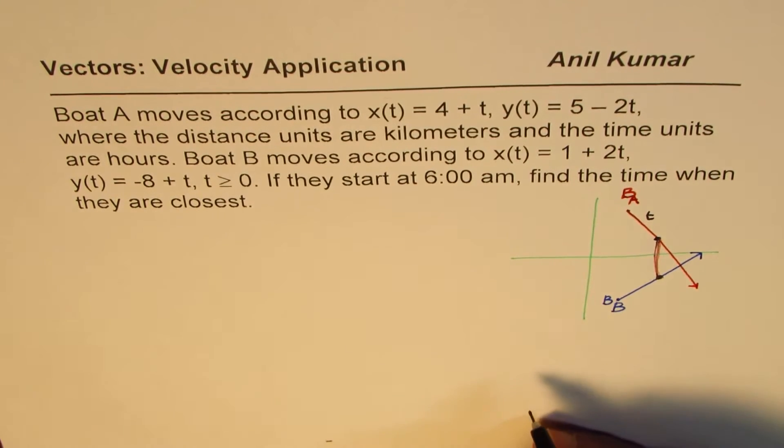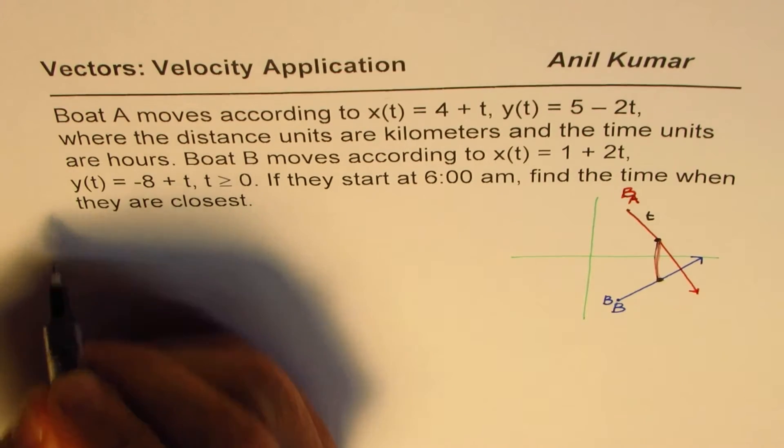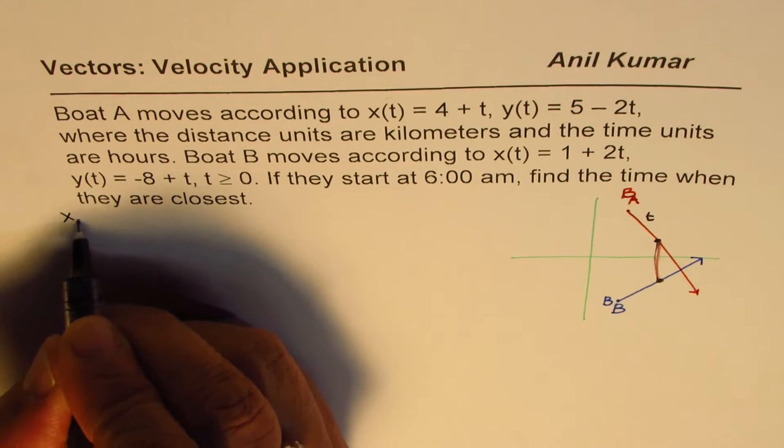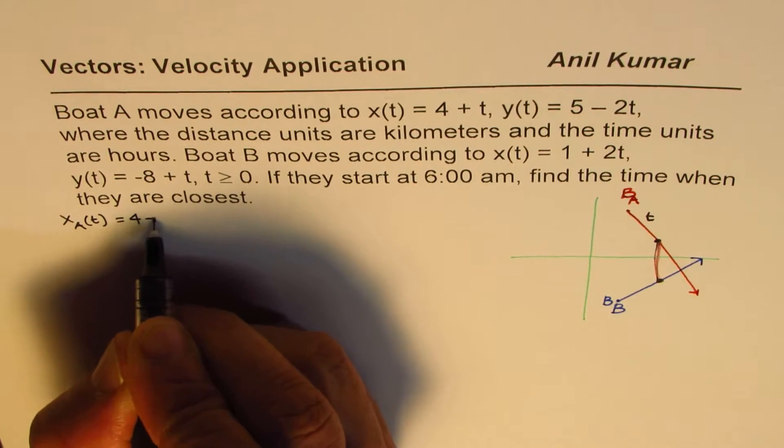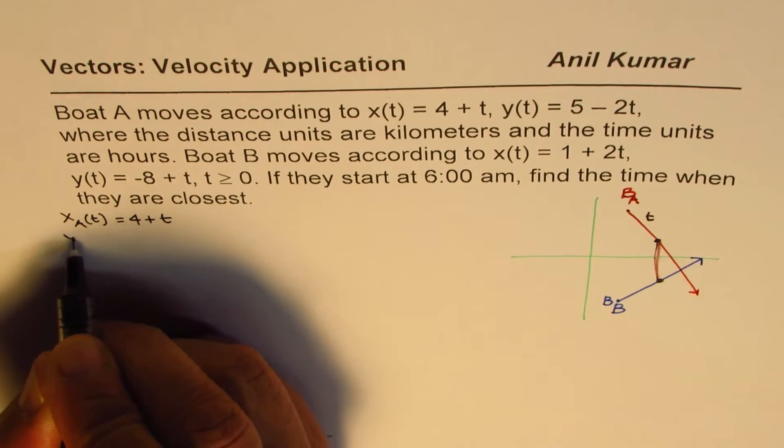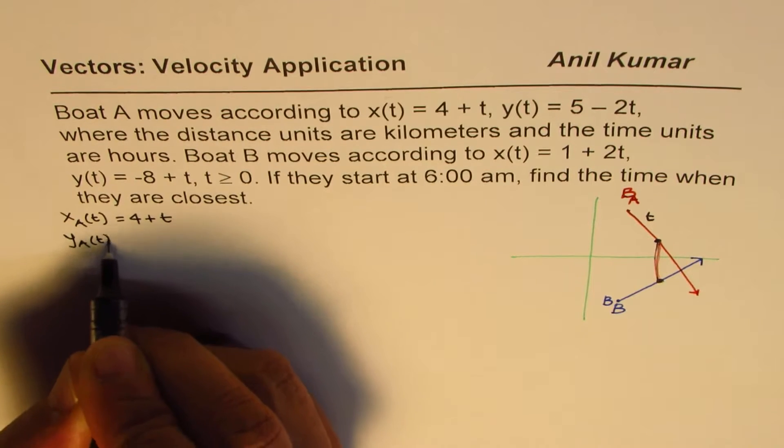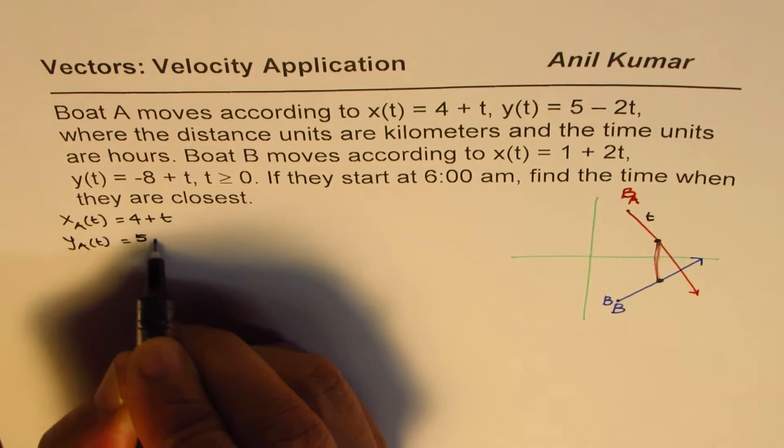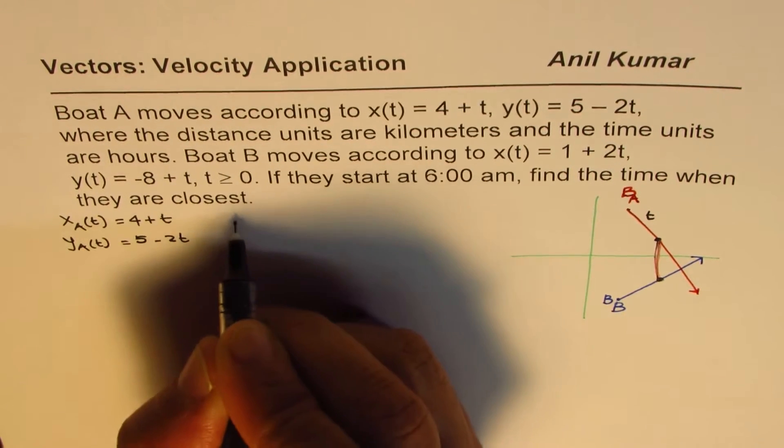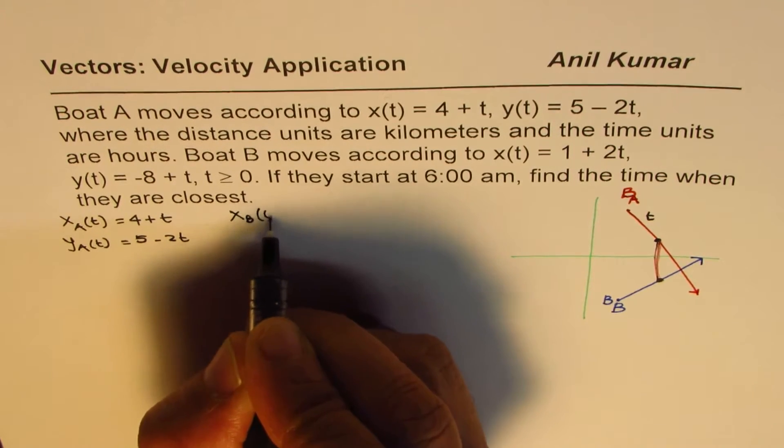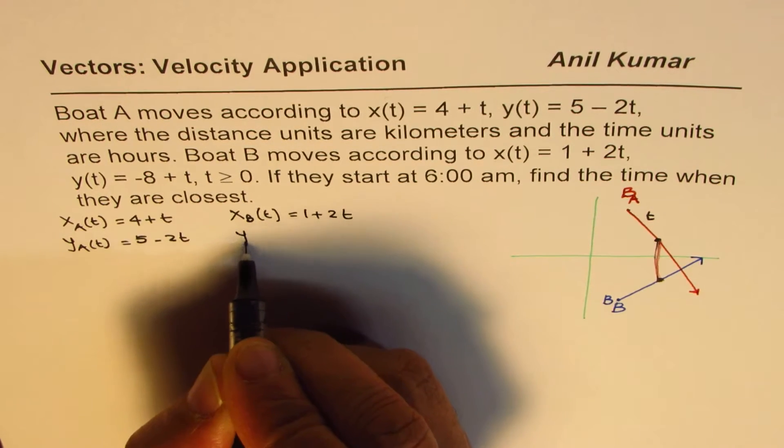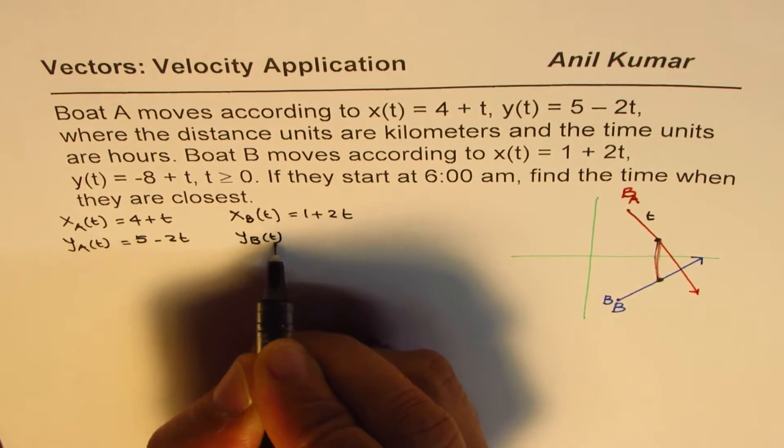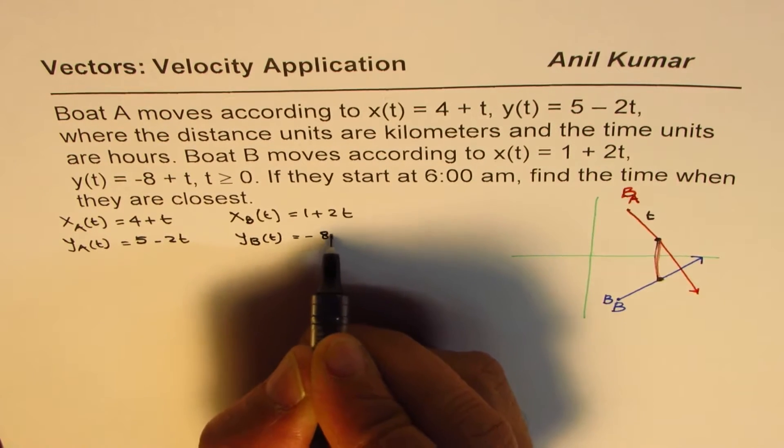Let's begin by understanding the equations. For boat A, I will write x_A(t) = 4 + t and y_A(t) = 5 - 2t. For boat B, x_B(t) = 1 + 2t and y_B(t) = -8 + t.